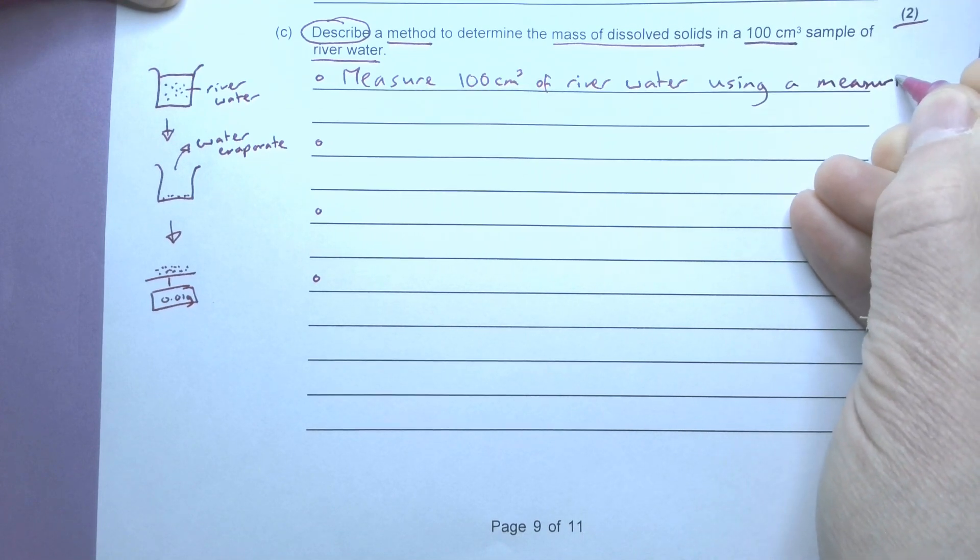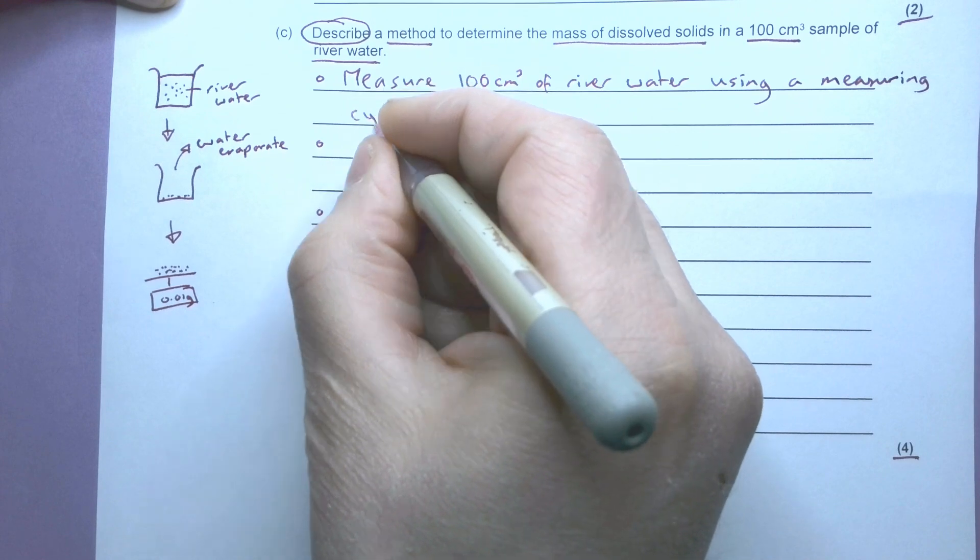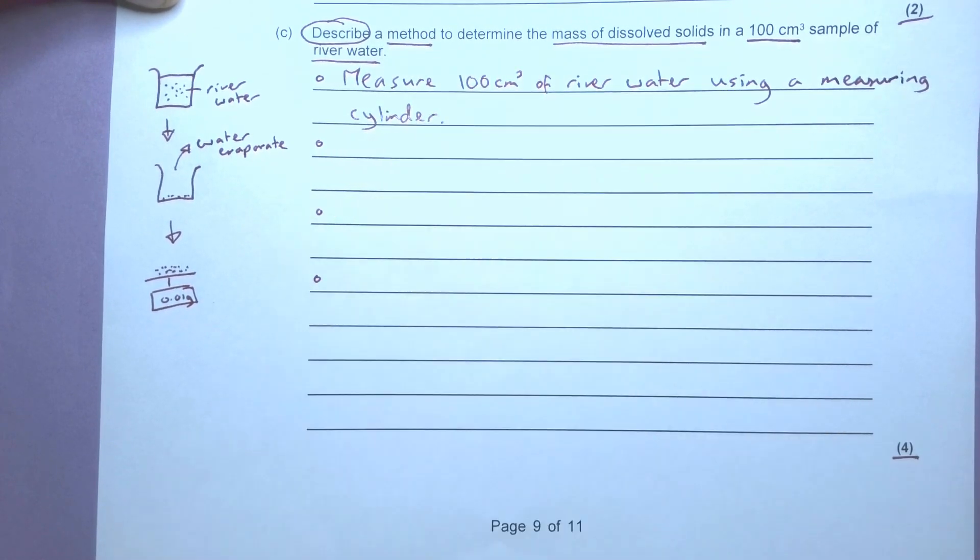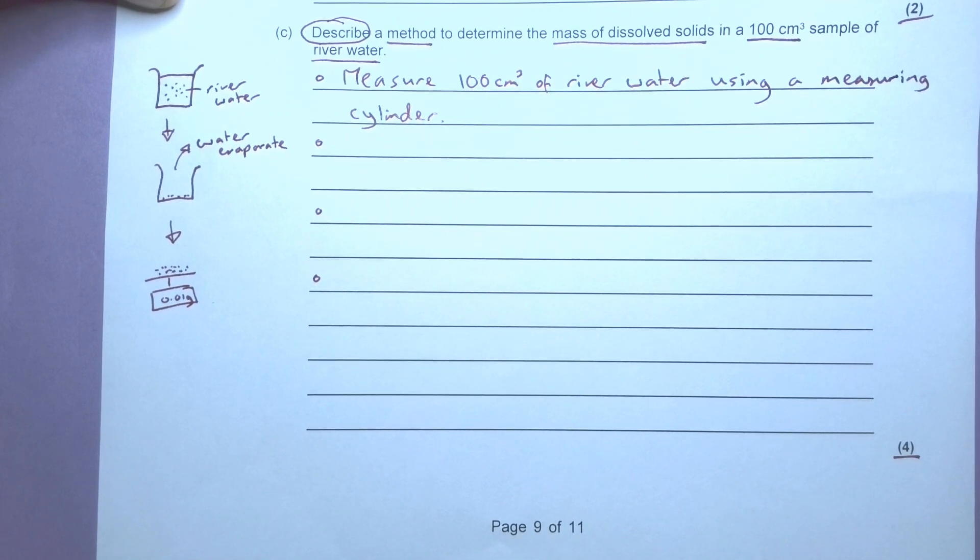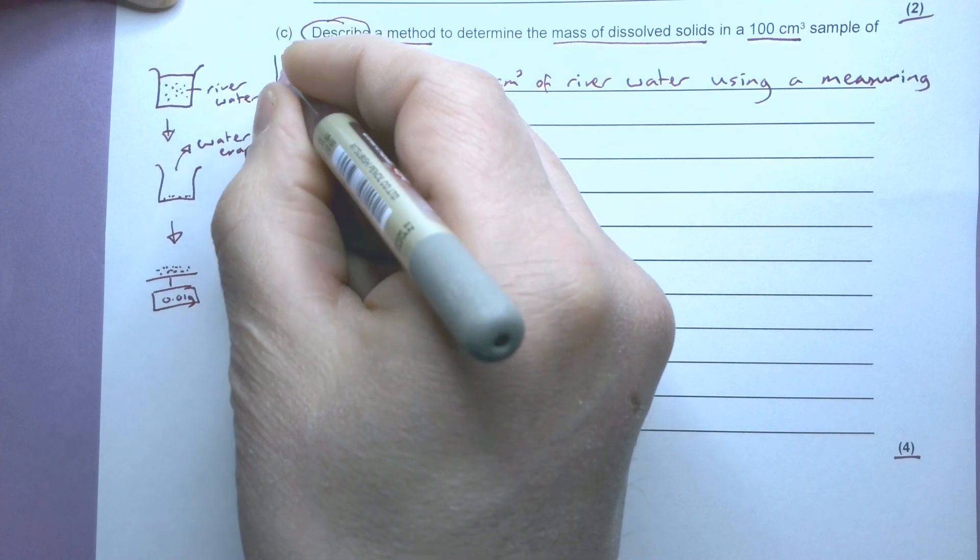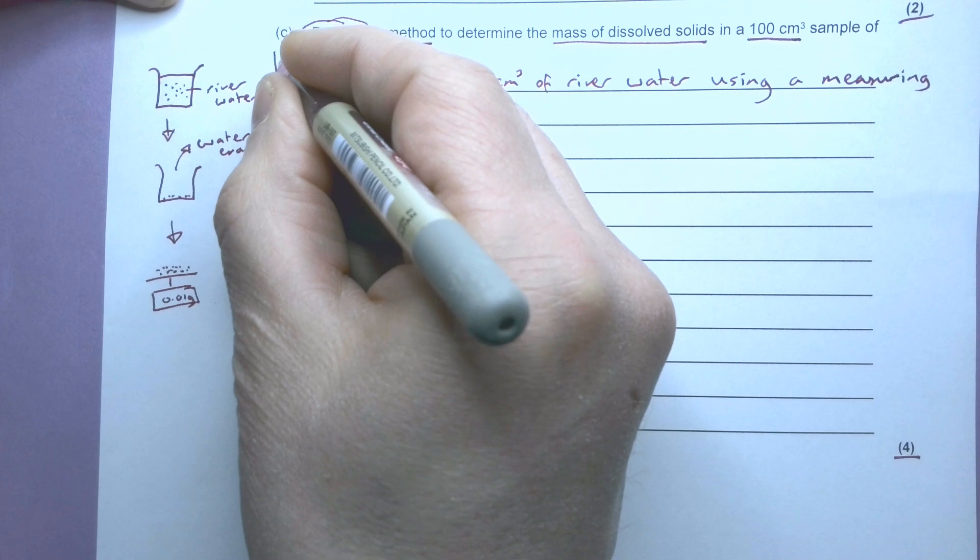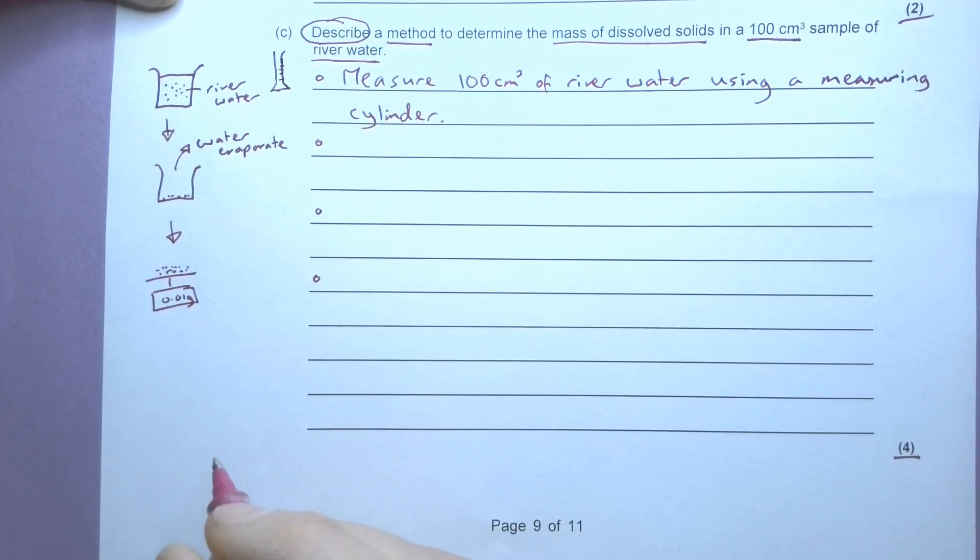Okay, be really careful here. In science we don't use jugs, and we don't measure in beakers either. Whenever we're measuring volume we use a measuring cylinder. And if you remember, the measuring cylinder is the tall beaker like that with the numbers down the side.